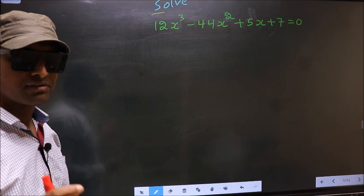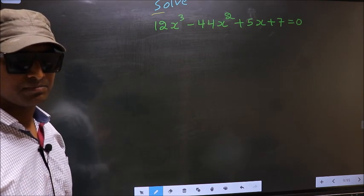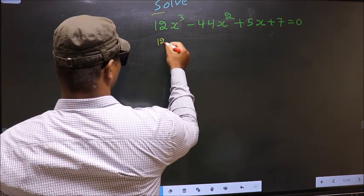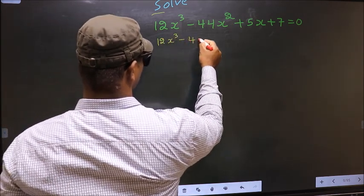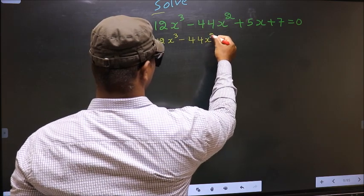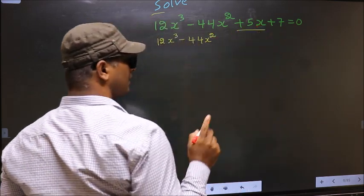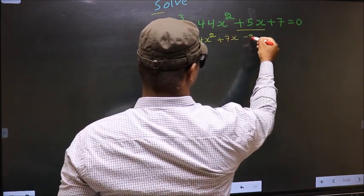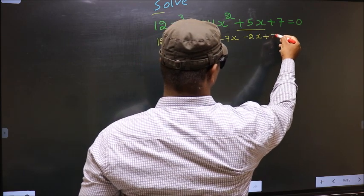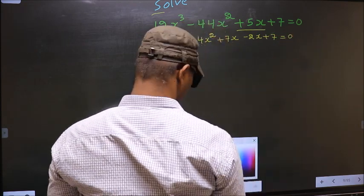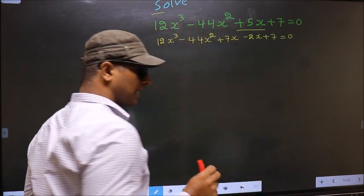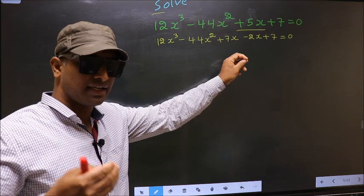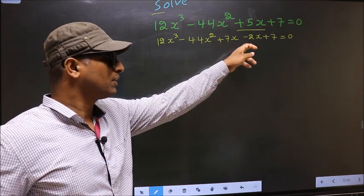For that we have to change the x term. In place of plus 5x, now I write plus 7x minus 2x. So the equation becomes 12x³ minus 44x² plus 7x minus 2x plus 7 equal to 0.